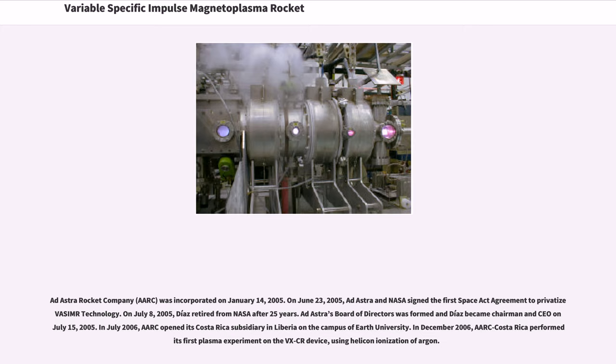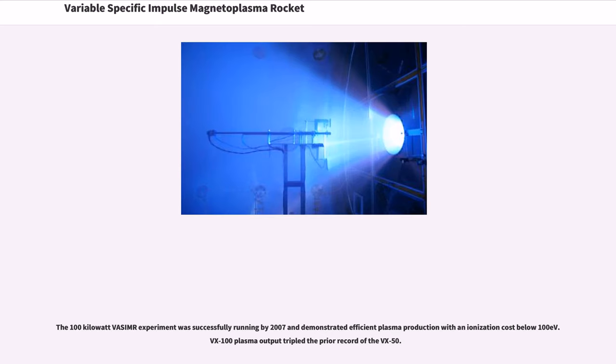In December 2006, ARC Costa Rica performed its first plasma experiment on the VXCR device using helicon ionization of argon. The 100 kW VASIMR experiment was successfully running by 2007 and demonstrated efficient plasma production with an ionization cost below 100 eV. VX-100 plasma output tripled the prior record of the VX-50.